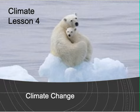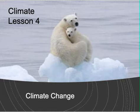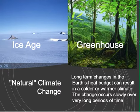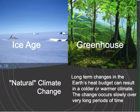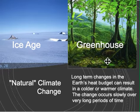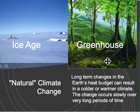Welcome Earth Science students to climate lesson number four. In this lesson we're going to be talking about climate change. First we're going to look at what I call natural climate change — causes of climate change that are completely normal, periodic, and predictable, and have happened since the beginning of Earth's history. We'll look at two extremes: an ice age and a greenhouse time. These long-term changes happen very slowly, which is different from human-caused climate change, which happens very quickly.